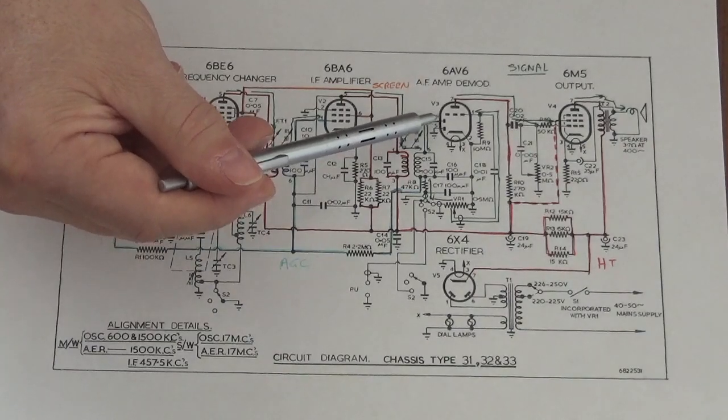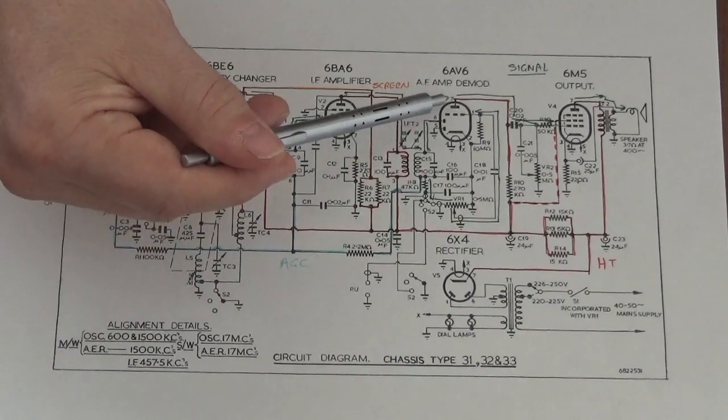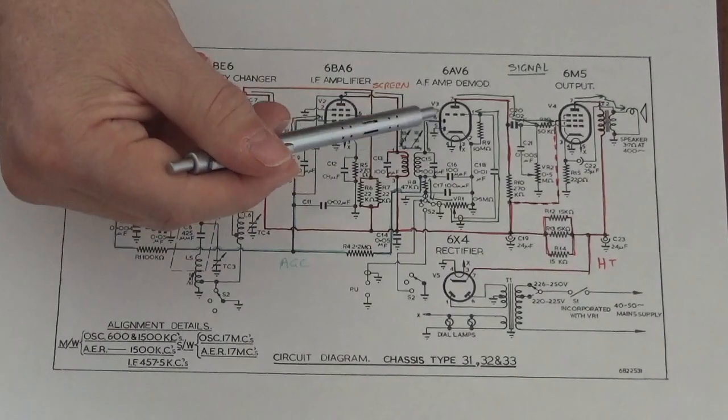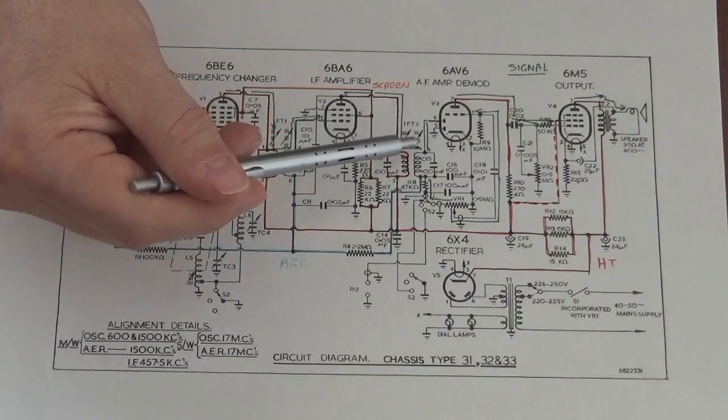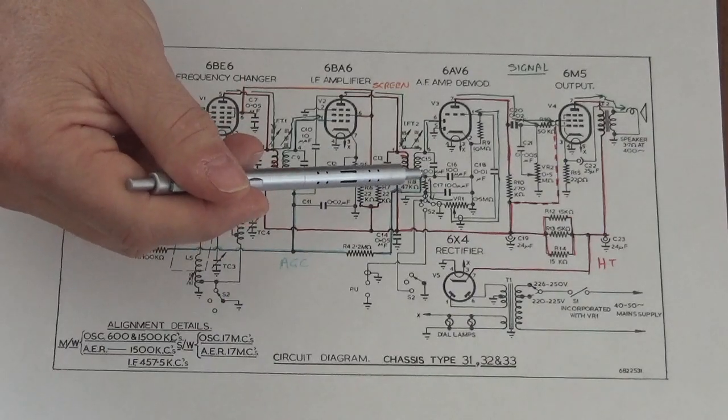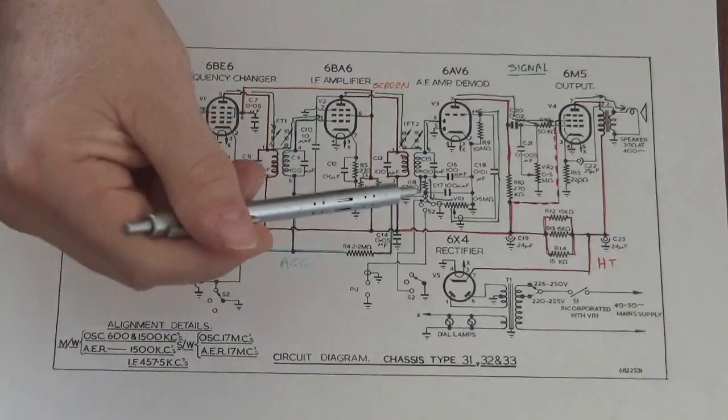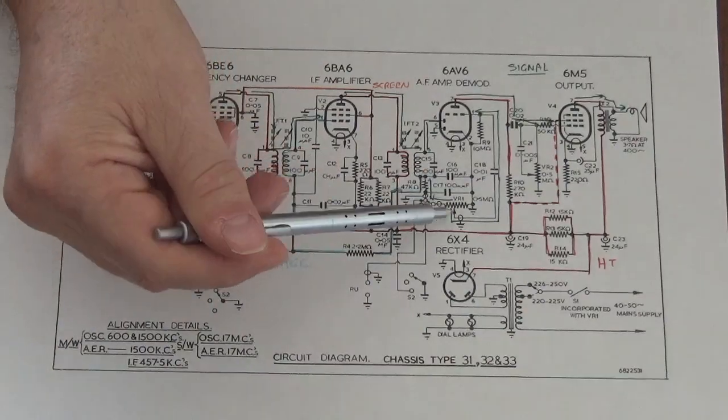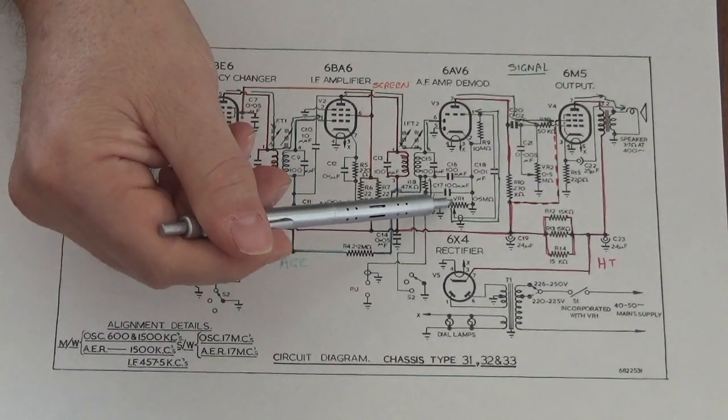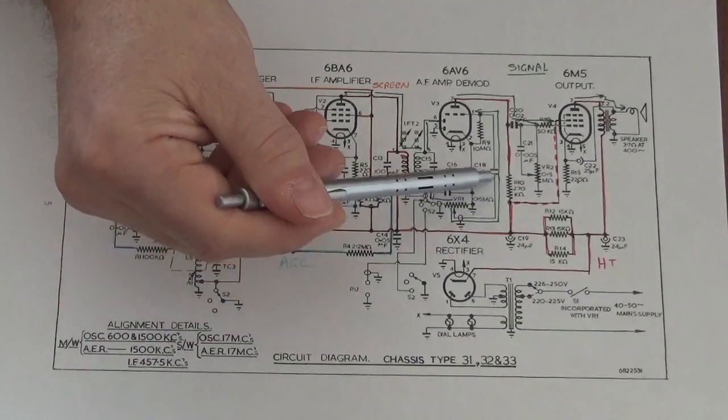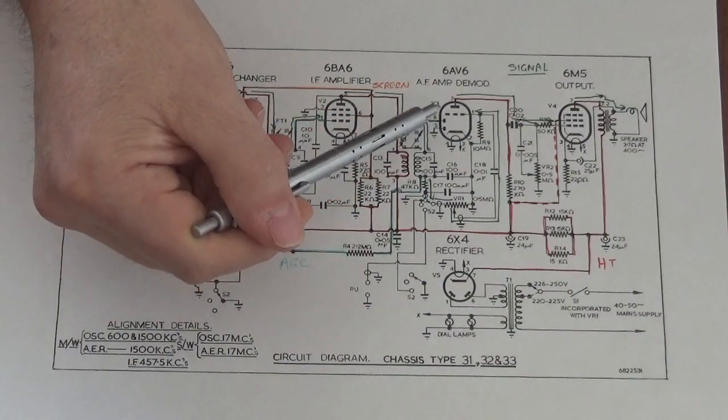The amplified signal is coupled through this transformer and presents on the anode of this diode. This valve is a dual diode single triode valve, and this diode is used to demodulate the signal. The output appears across our volume control with some filtering to get rid of all that IF frequency. The signal is picked up off the volume control and coupled through this capacitor onto the control grid of the triode component.